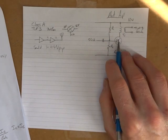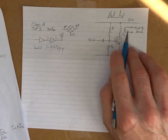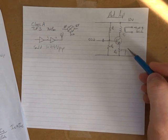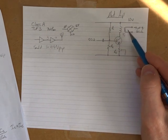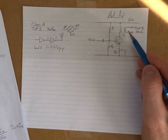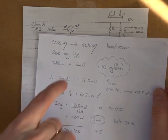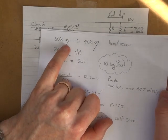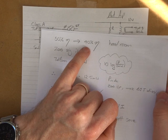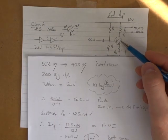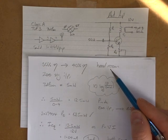Now a class A amplifier, it's transformer coupled, it's class A. So being a transformer coupled amplifier, my maximum efficiency that I'm going to get out of that amplifier is 50%. So I'm going to work on 40% efficiency for that particular amplifier there, just to get a bit of headroom.